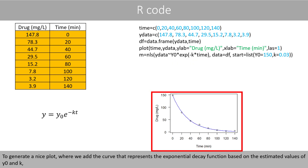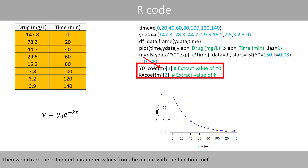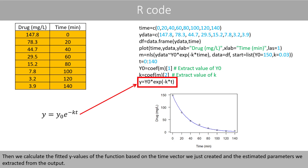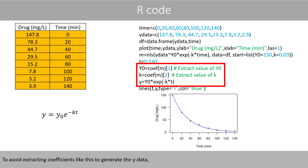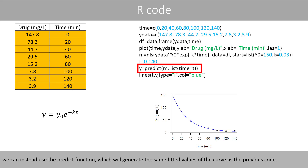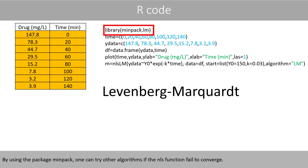To generate a nice plot showing the curve representing the exponential decay function based on the estimated values of y0 and k, we first create a vector with time points covering the desired range. Then we extract the estimated parameter values from the output with the function coef, calculate the fitted y-values, and draw a blue curve with the function lines. To avoid extracting coefficients manually, we can instead use the predict function, which generates the same fitted values. The default method in the NLS function is the Gauss-Newton method; other methods can be tried using an alternative package if NLS fails to converge.